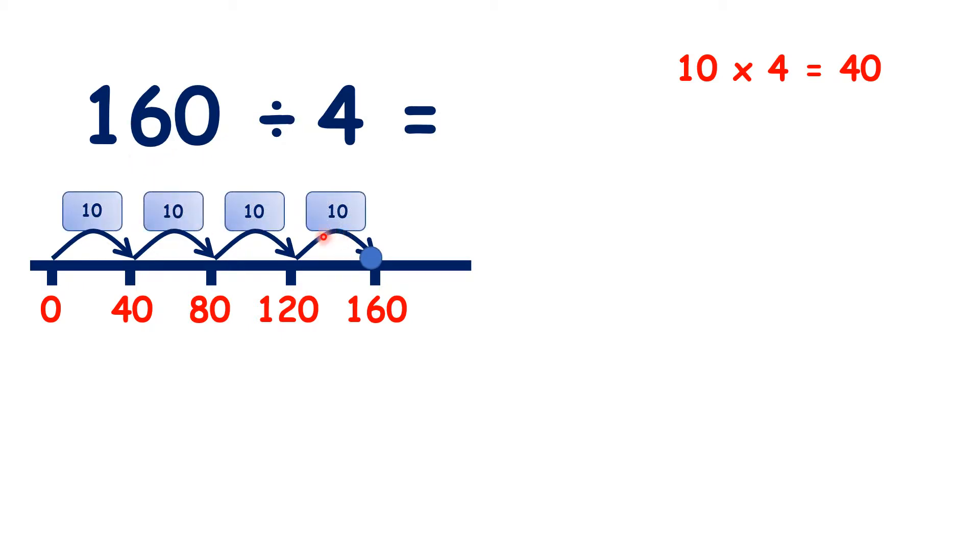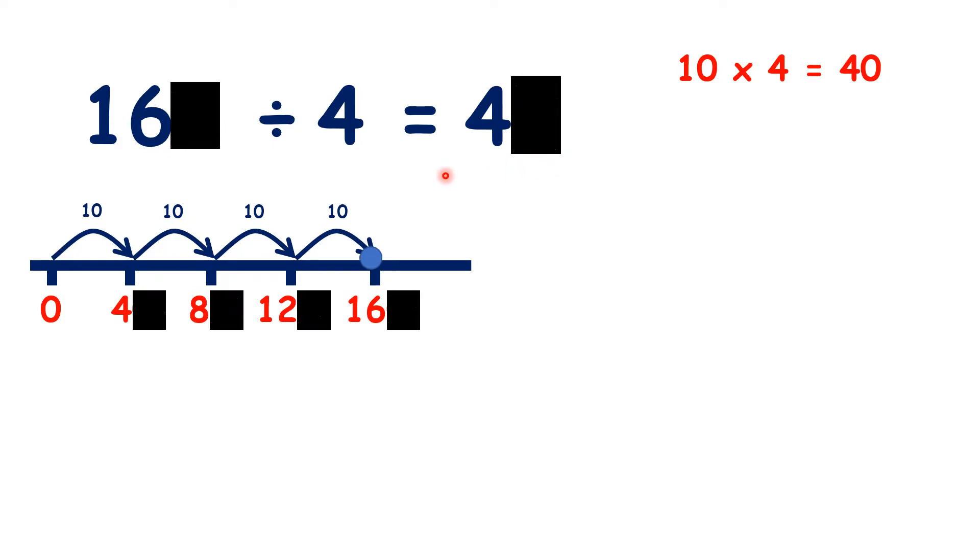So altogether, we counted on 10 steps of 4, 4 times. So that's 40 steps of 4. So our answer is 40. And we can see that if we know that 16 divided by 4 is 4, then 16 tens divided by 4 is 4 tens. So 160 divided by 4 is 40.